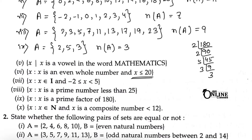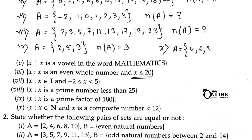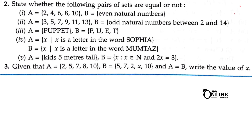Sum number 10: x belongs to ℕ and x is a composite number less than 12. The composite numbers less than 12 are 4, 6, 8, 9, and 10 — a total of 5 numbers. So it is a finite set and the cardinal number is 5.